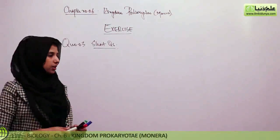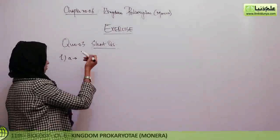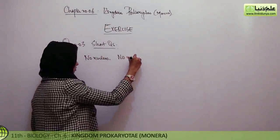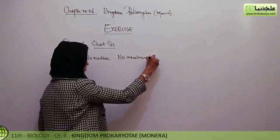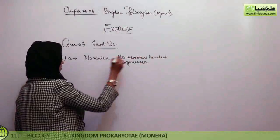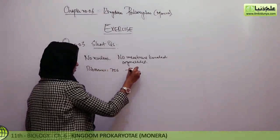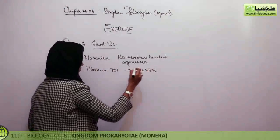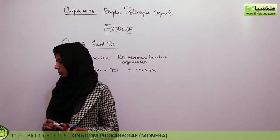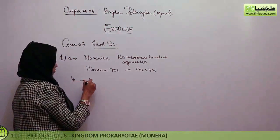Prokaryotes can have six general characteristics. Part one: no nucleus, no membrane-bounded organelles, ribosomes are 70S. Do any other microbial groups besides bacteria have prokaryotic cells? The answer is no.